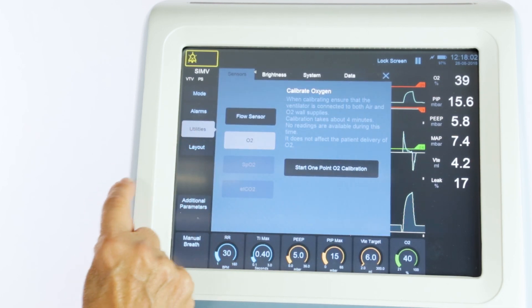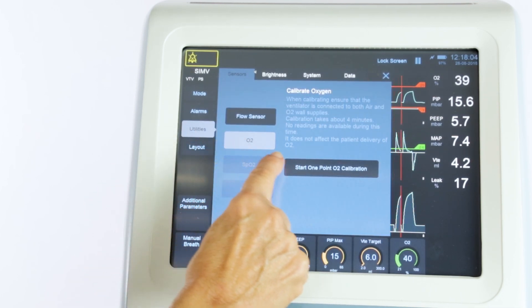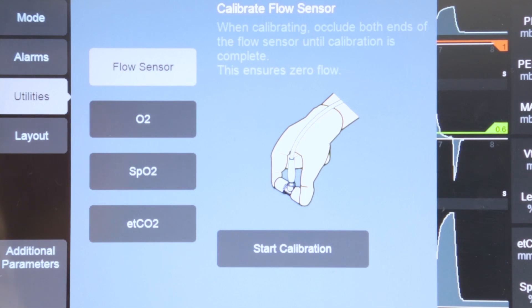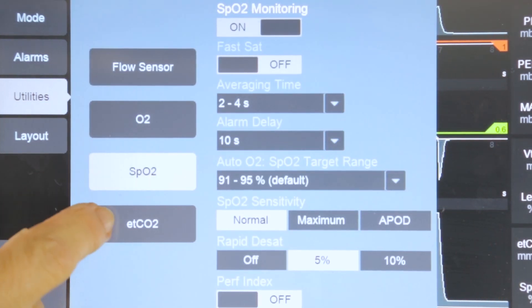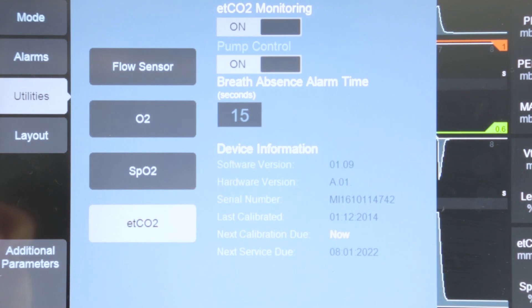The Utilities menu opens a page that allows you to calibrate the oxygen and flow sensor. If SPO2 or Entidal CO2 are installed, control buttons for these functions will also be available.